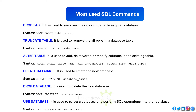ALTER TABLE is used to add, delete, drop, or modify columns in an existing table. Syntax: ALTER TABLE table_name ADD/DROP/MODIFY column_name datatype.